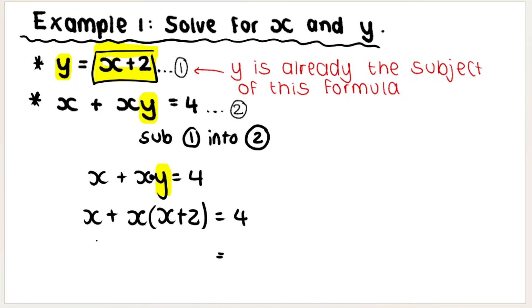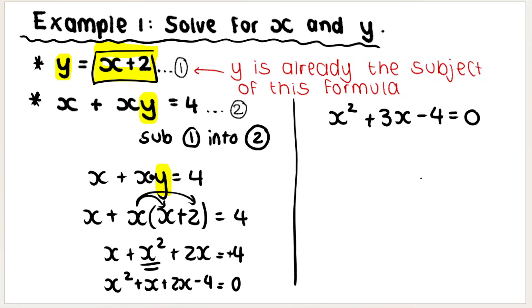Now what I do is what you would normally do when you solve equations. You distribute the X into the bracket. You're going to get X squared plus 2X equals 4. When you see an X squared, you know that it is a quadratic equation. So you need to make that equation equal to zero. This is plus 4, it's going to become minus 4. So my equation is going to look like this.